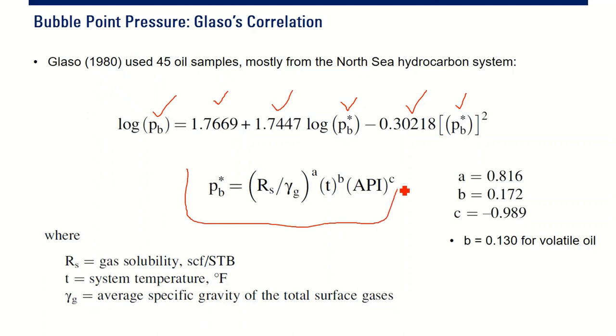It is this. Quite simple. Pb star is gas solubility divided by specific gravity powered by A, multiplied by T. T is system temperature to the power of B, multiplied by API degree to the power of C. And the ABC is this.